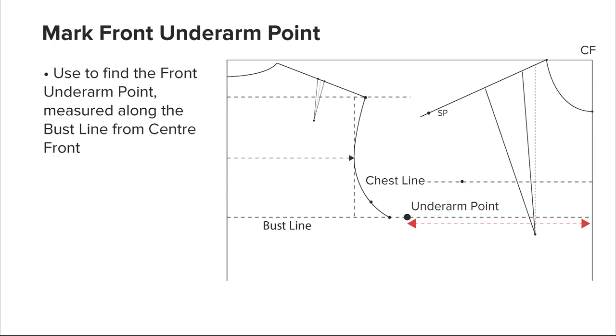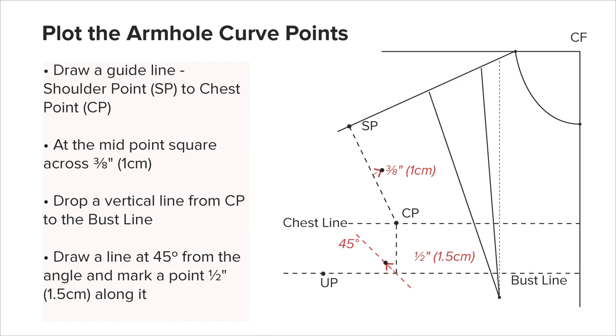Plot the armhole curve: draw a guideline joining front shoulder point and front chest point. Halfway along, square out a line three-eighths of an inch or 1 centimeter in length towards center front. This is a guide for the armhole curve. Square down from the front chest point to the bust line, and from there draw a line at 45 degrees. Mark a point along this line a half an inch or 1.5 centimeters, or up to 1 inch or 2.5 centimeters for larger sizes from the angle. This is a guide for the lower part of the armhole.